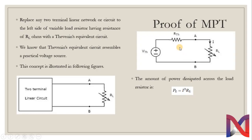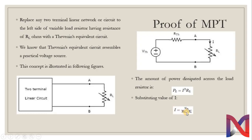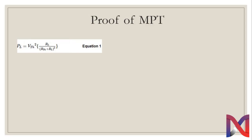We have current I flowing through the circuit, so the power is I² multiplied by R_L through this load. Substituting the value of I_L, which is equal to V_Thevenin divided by (R_Thevenin + R_L), into the power equation, we get P_L = V_Thevenin² × R_L divided by (R_Thevenin + R_L)².